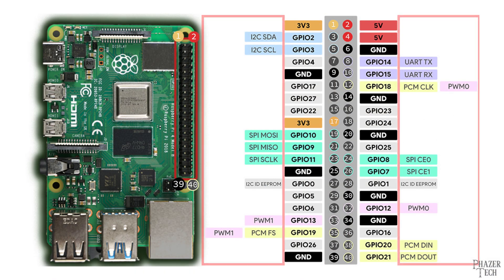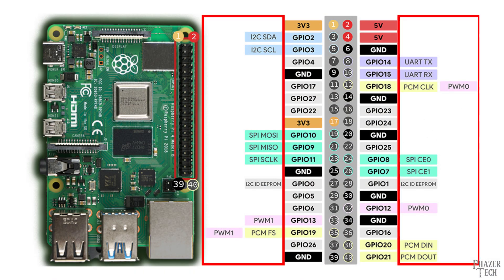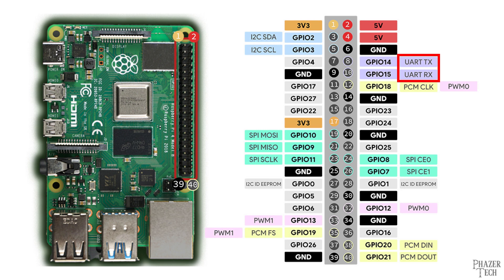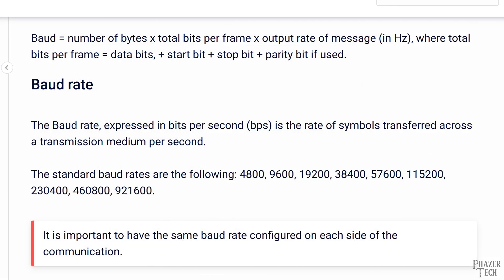Looking at the outer boxes on the GPIO diagram, we can see more advanced functions that can be assigned to specific pins. Some of these are communication protocols used for transferring data with various devices. UART is the most basic form of serial communications. It contains two pins: the TX pin for sending data to another device, and the RX pin for receiving data. Generally speaking, UART is the slowest form of communications compared to the other protocols, though some devices can support faster UART speeds.